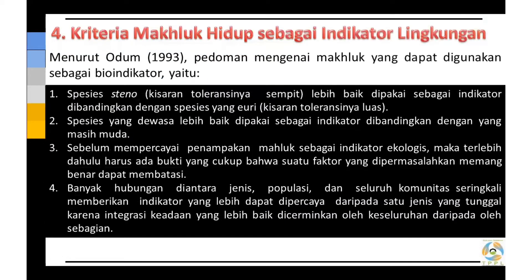Untuk submateri keempat yang berkaitan dengan kriteria makhluk hidup sebagai indikator lingkungan, berdasarkan Odum 1993, pedoman mengenai makhluk yang dapat digunakan sebagai bioindikator itu ada empat. Yang pertama adalah spesies steno atau kisaran toleransinya sempit, lebih baik dipakai sebagai indikator dibandingkan dengan spesies yuri yang kisaran toleransinya luas.